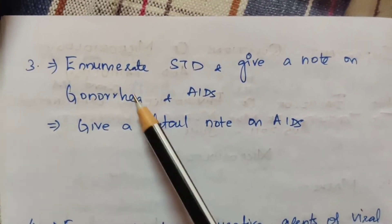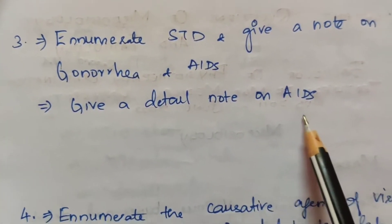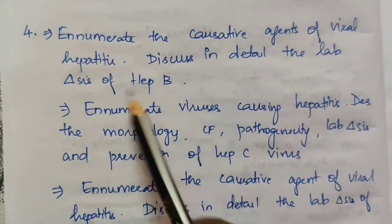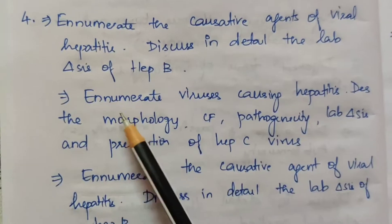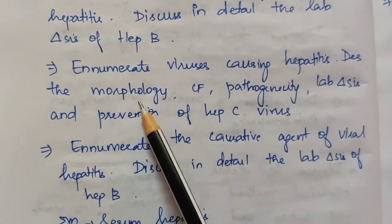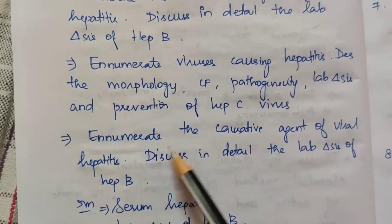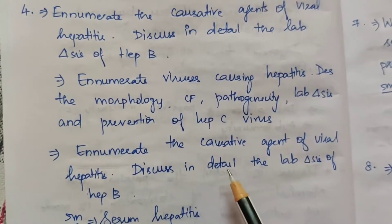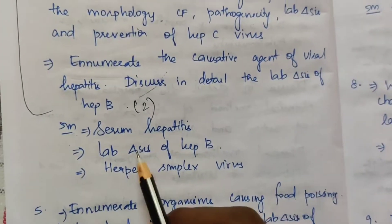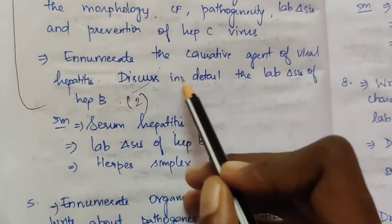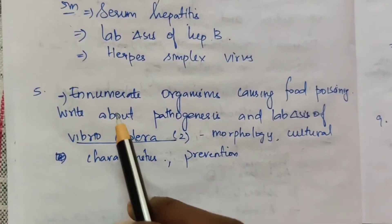The third topic: enumerate sexually transmitted diseases and give a note on gonorrhea. In the 15-mark section, enumerate the causative agents of viral hepatitis and discuss in detail the lab diagnosis of hepatitis B. Another 15-mark question: enumerate viruses causing hepatitis, describe the morphology, clinical features, pathogenesis, lab diagnosis, and prevention of hepatitis C. Lab diagnosis of hepatitis B has appeared 2 times. Serum hepatitis C and lab diagnosis of hepatitis C also appear as questions.